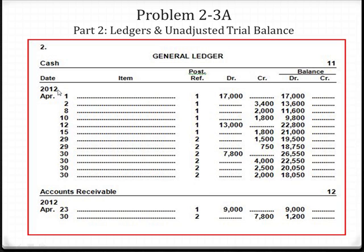So for cash, on April 1st, on journal page number 1, we debited cash for $17,000, bringing the balance for cash to $17,000. On April 2nd, we credited cash for $1,000, bringing the balance down to $13,600. For every journal entry that references cash, we will record that line from the journal entry in this ledger, recording the debit and credit, and then showing the running balance. So at the end of April, cash had a balance of $18,050.